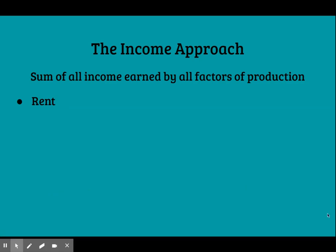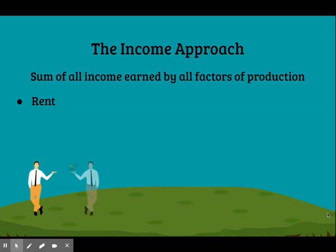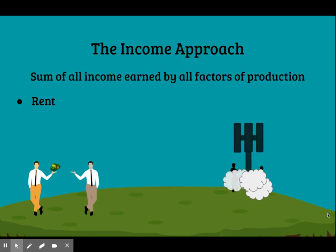Rent is earned by those who lease their land or natural resources to firms for use. For example, cell phone towers are everywhere. They're built on land that is almost always privately owned. The carrier company who wants to build the tower must pay rent to the owner of the land in order to use it. Once they've paid that rent, they can build their tower and operate it.